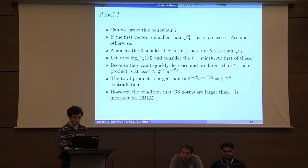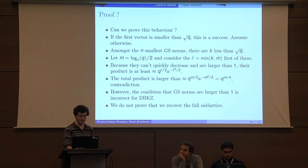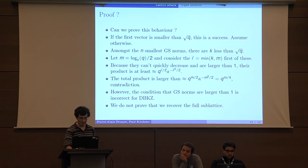However, the condition that Gram-Schmidt norms are larger than 1 is incorrect for the dual BKZ algorithm. So we do not prove that we recover the full sublattice. We can recover a constant fraction times N vectors in the sublattice, but we don't know actually—we need a much larger Q if you want to recover all of them.